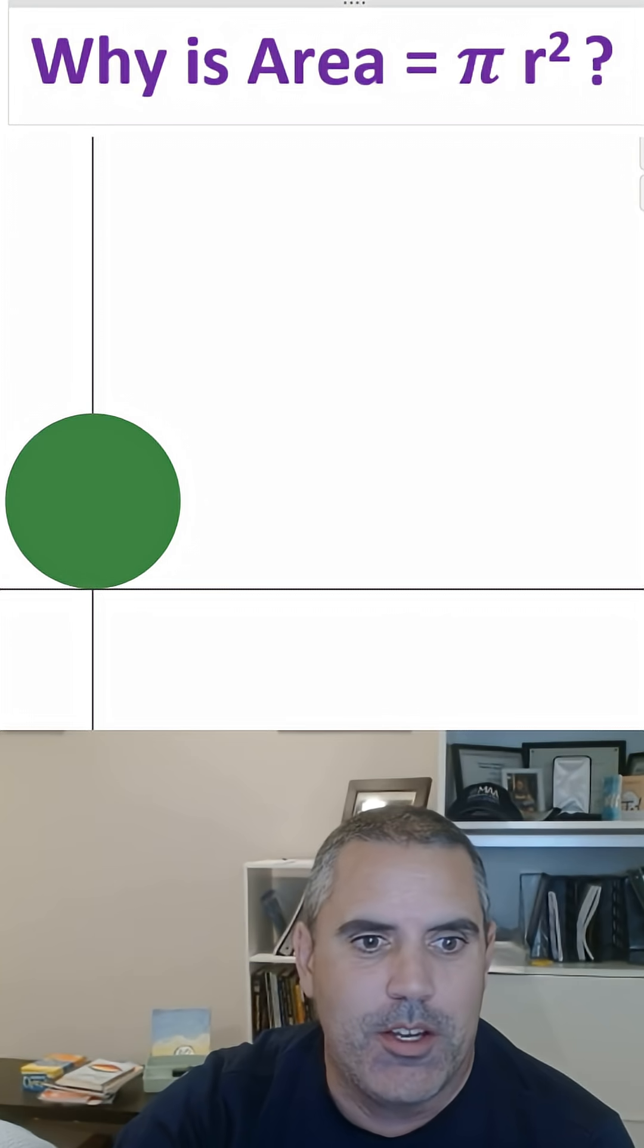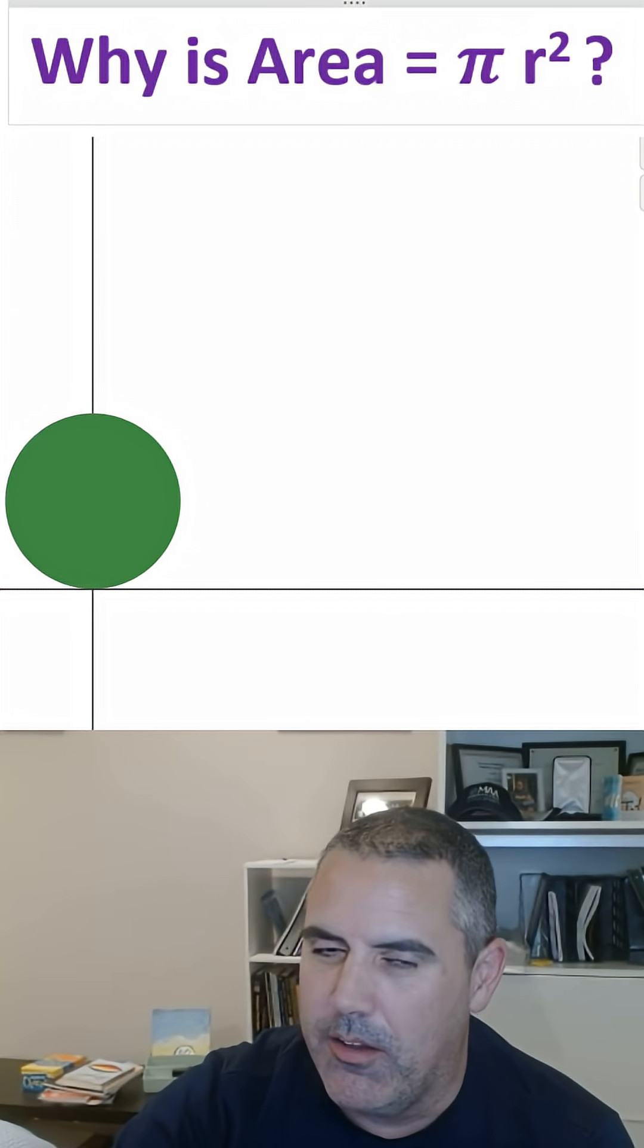So there you go. There's a circle there. And why is that the area? I've seen many proofs of this, but this is my favorite one.